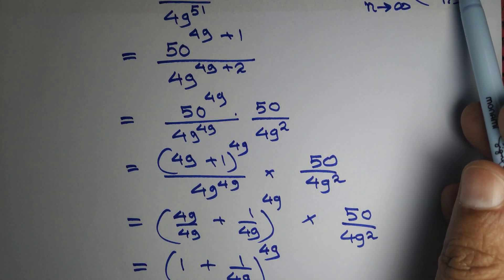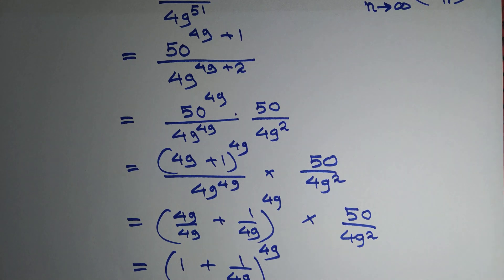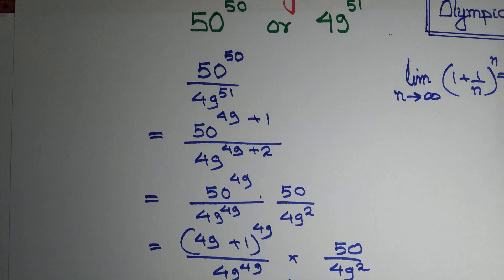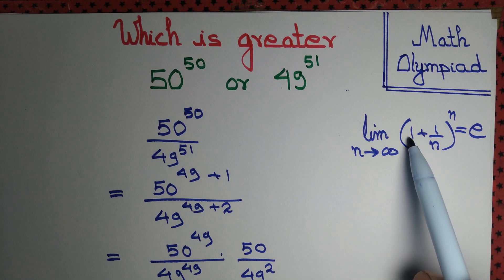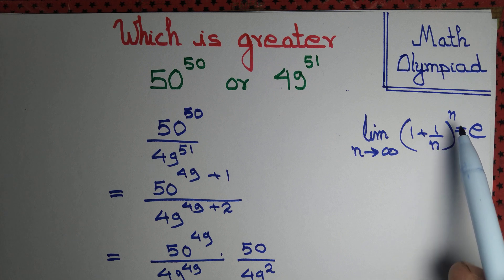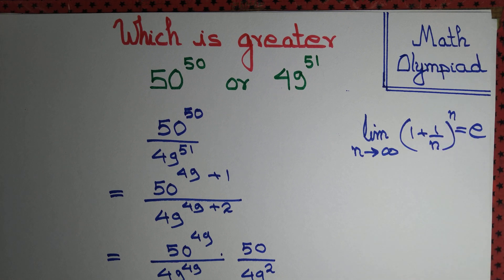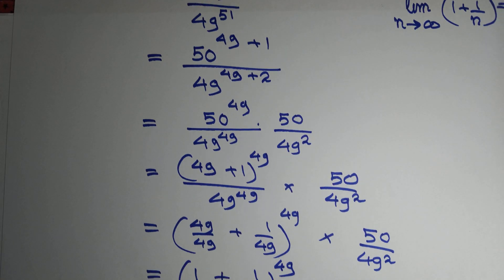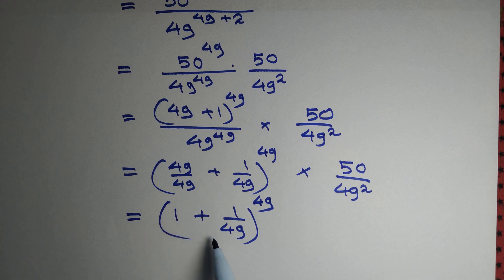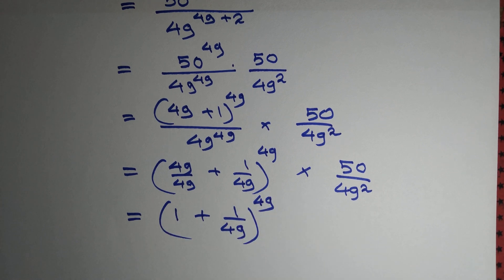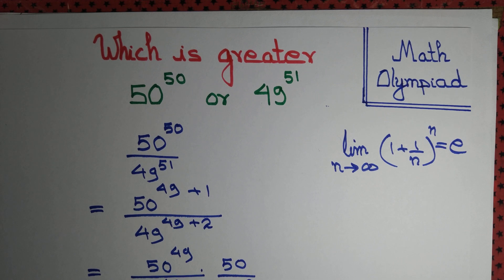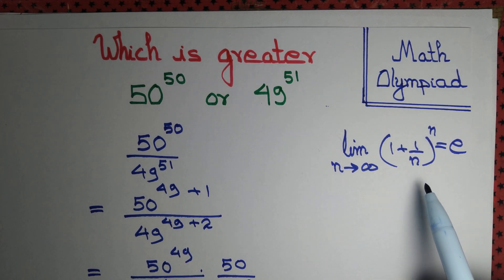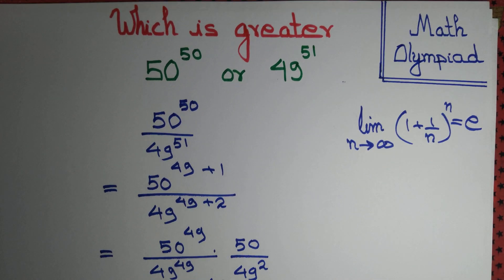We see that 49 cancels and we have (1 + 1/49)^49. This resembles the limit lim(n→∞)(1 + 1/n)^n. If we take n equal to 49, we get exactly (1 + 1/49)^49.